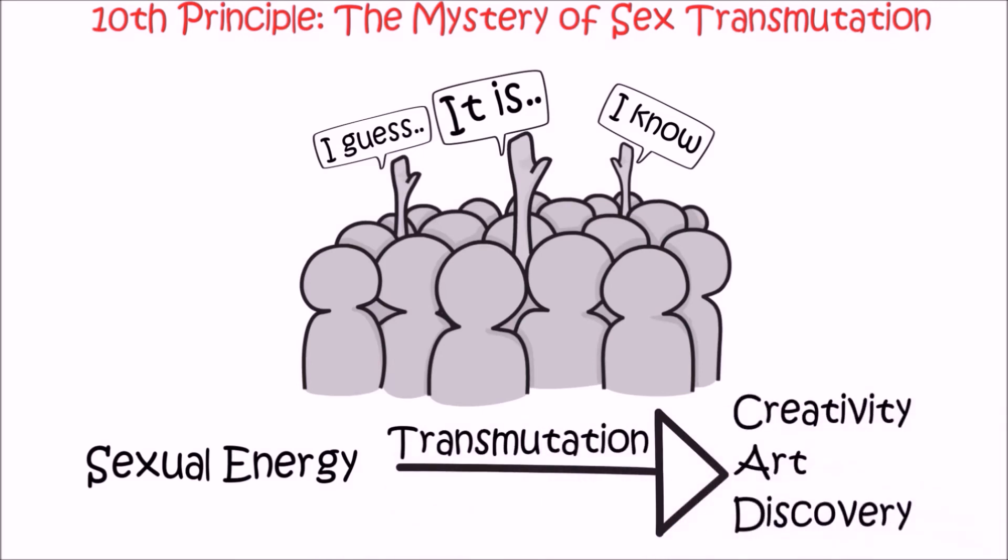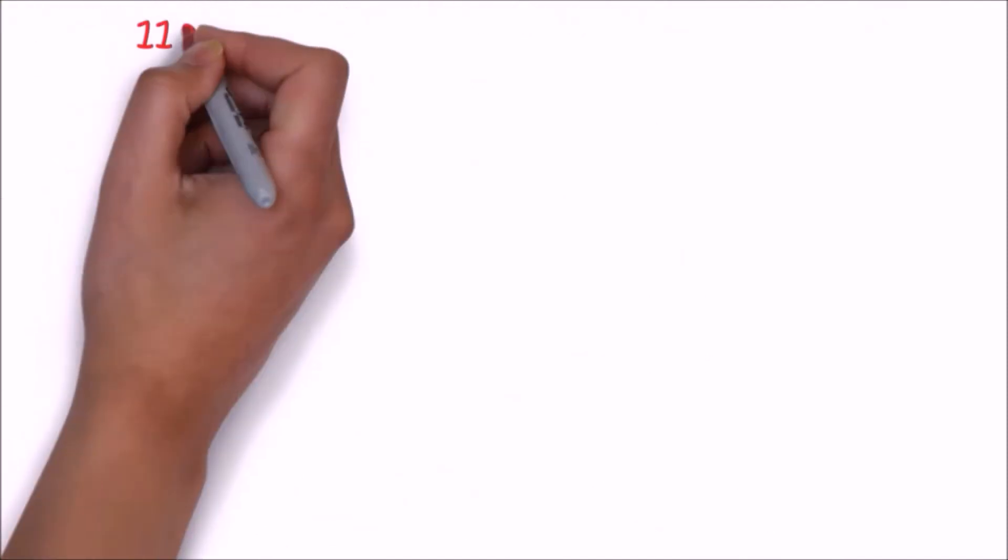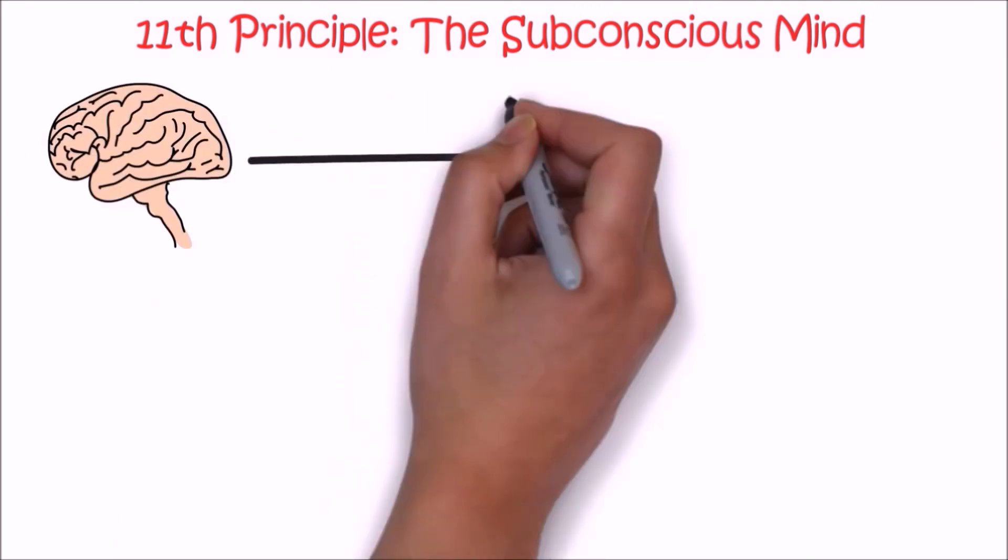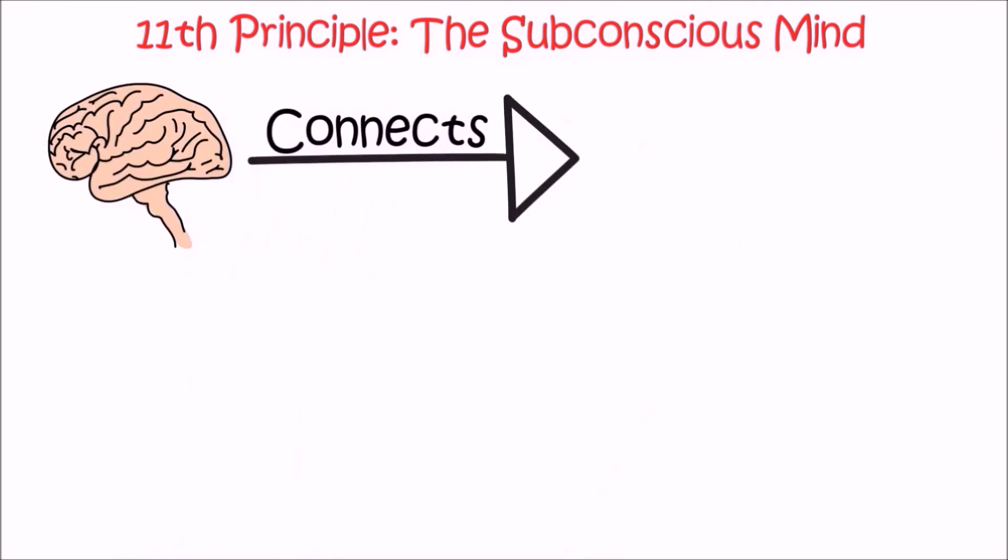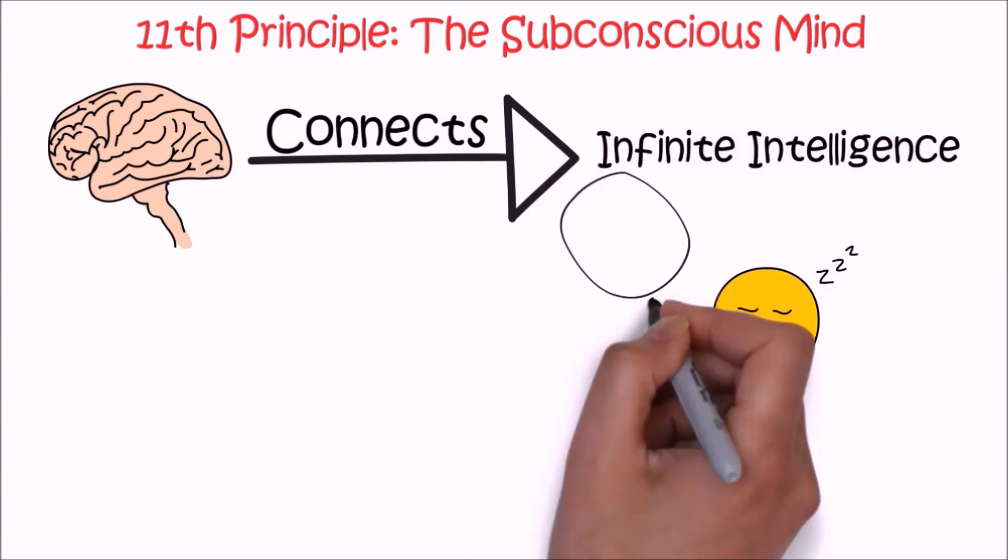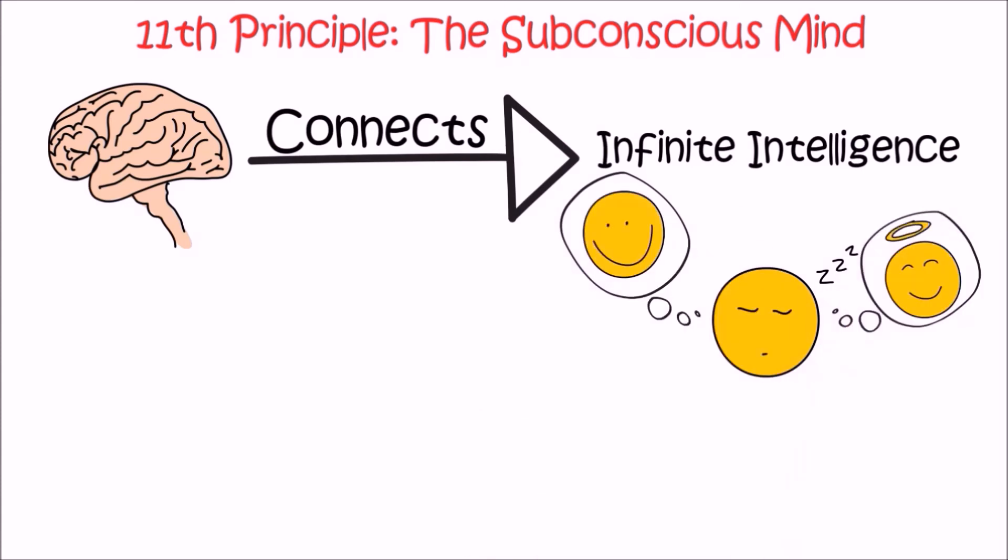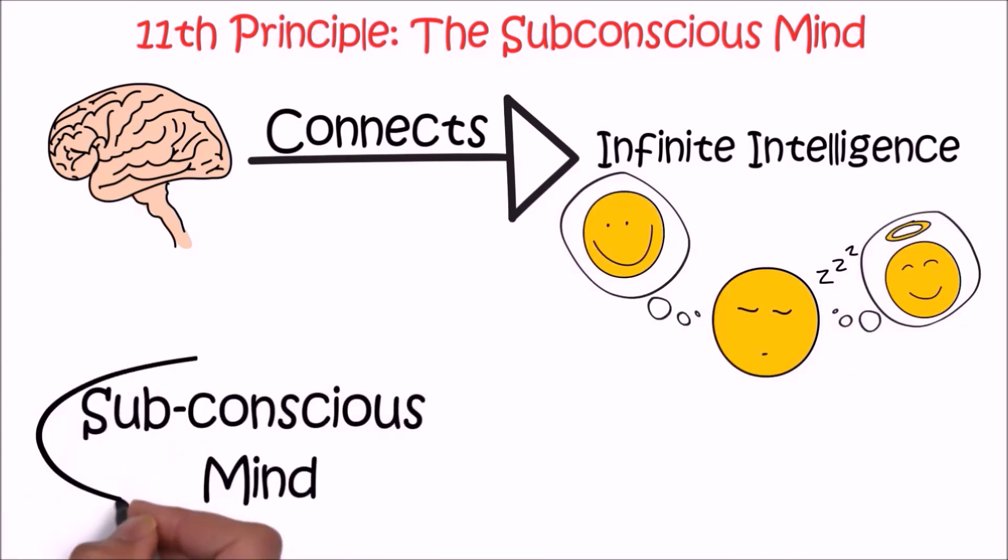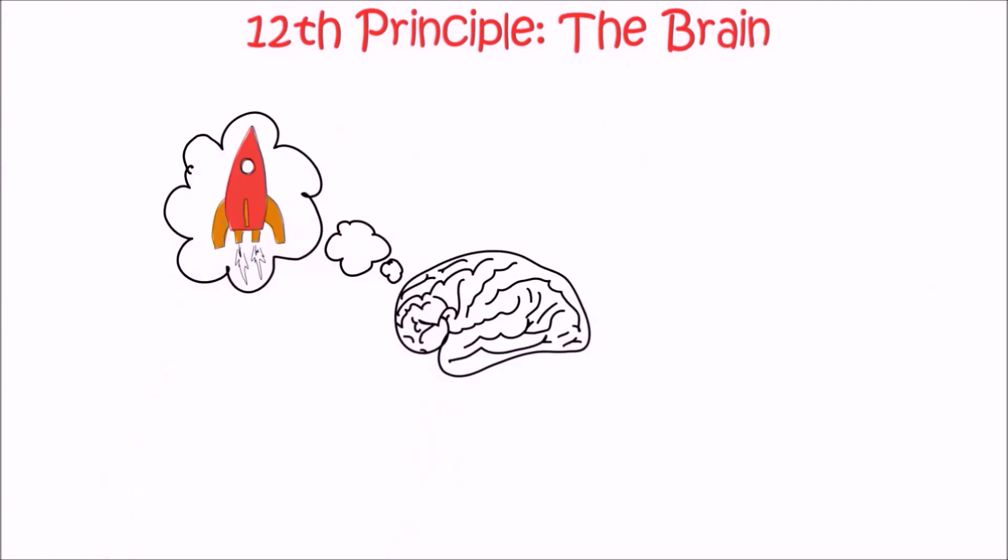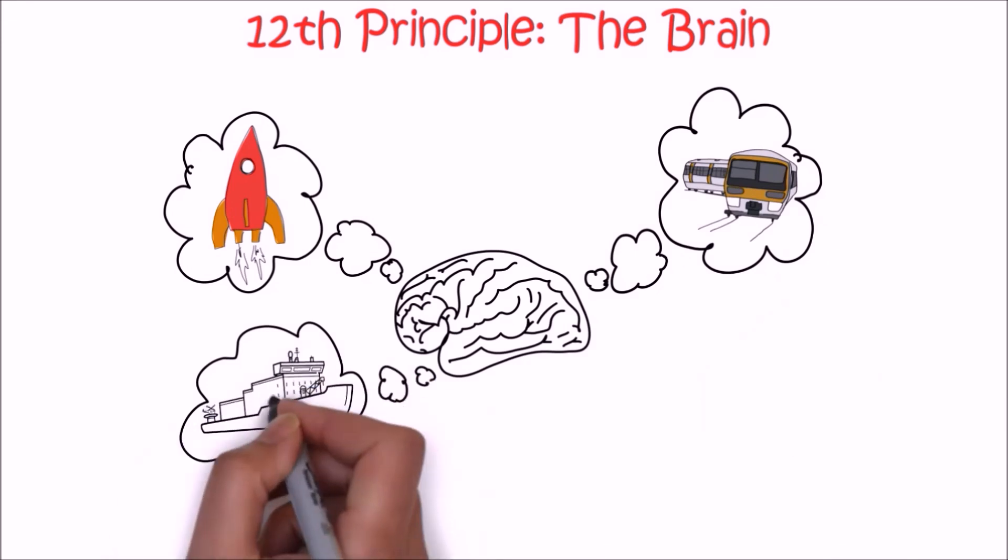The 11th principle is the subconscious mind. The author explains how the subconscious mind can connect you to infinite intelligence. Many times we do things unconsciously without even knowing it. The main cause is our brain is continuously working. If we can somehow influence our brain, our subconscious mind, then we can make breakthroughs. The 12th principle is the brain. The brain is no doubt the greatest instrument that has allowed human beings to change the world.